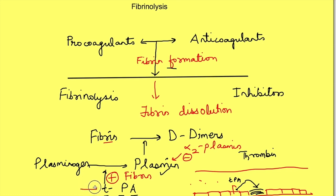At other sites, tissue plasminogen activators are also kept in check by plasminogen activator inhibitors released from endothelial cells. So at normal sites, plasmin is kept in check by alpha-2 plasmin inhibitor, and tissue plasminogen activators are kept in check by plasminogen activator inhibitors. The system is such that all the processes are localized at the site of injury, and factors leading to fibrin formation — like thrombin — also activate factors which lead to its dissolution. So there is a temporal relationship built into clot formation and clot dissolution.